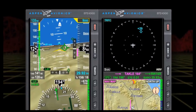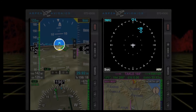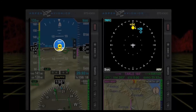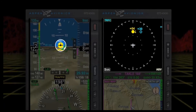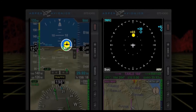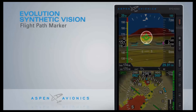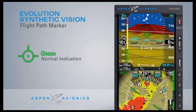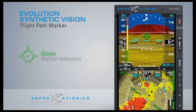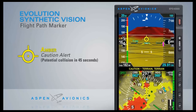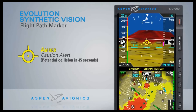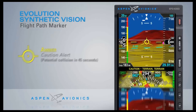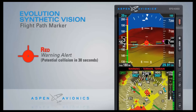For aircraft equipped with a compatible traffic detection system and the optional Evolution Hazard Awareness option, ESV 3D traffic symbols are presented on the synthetic vision views. The traffic symbols appear larger as traffic gets closer to the aircraft and smaller as they get further away. The flight path marker's shape and color change to provide an immediate visual cue whenever an alert is generated. A green flight path marker is the normal depiction. Amber indicates a caution alert — a potential terrain or obstacle collision within 45 seconds if the current flight path is maintained. Red indicates a warning alert and potential collision within 30 seconds.